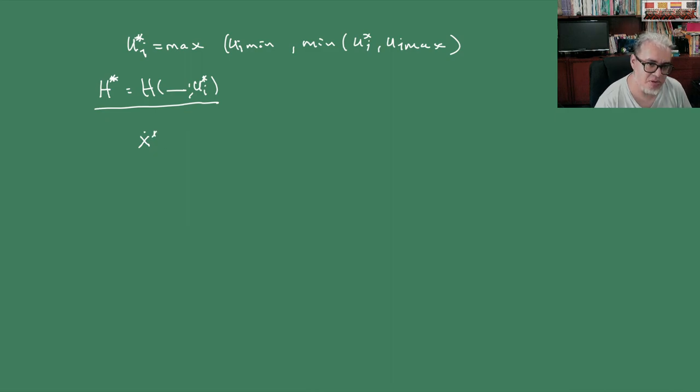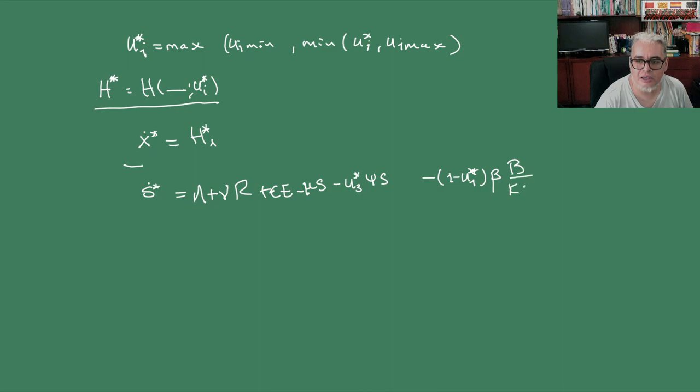Vamos a tener que X punto estrellita va a ser la H estrellita derivada parcial respecto de lambda. Entonces, ¿cómo se expresa? Pues vamos a tener la S punto estrella como lambda más nu R más epsilon E menos mu S menos U3 estrellita pi S menos (1 menos U1 estrellita) beta B sobre k más B por S. Es lo mismo, pero lo que vamos a buscar es cómo los expresamos ahora en términos de esos controles optimizados.